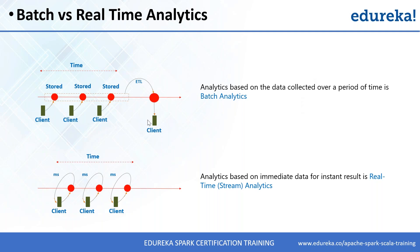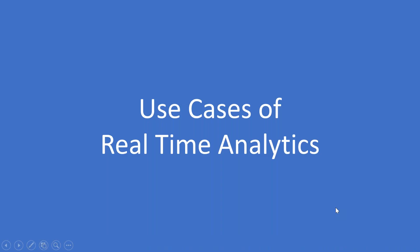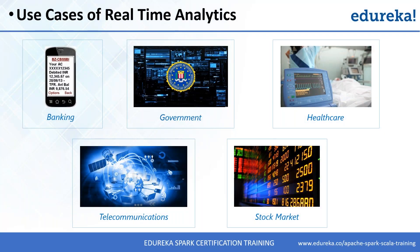This is the difference between batch and streaming data. Examples of real-time analytics use cases: stock market, banking, telecommunications, and healthcare. Why Spark when Hadoop is already there? Hadoop is designed for batch data — analysis coming at regular intervals — and for OLAP (Online Analytical Processing) on historical data to generate reports.